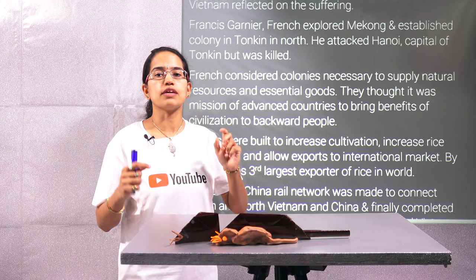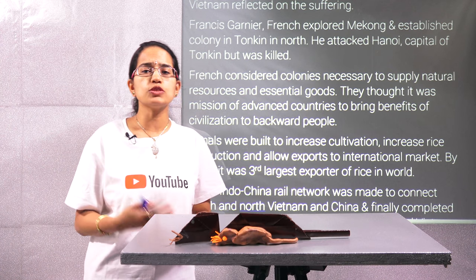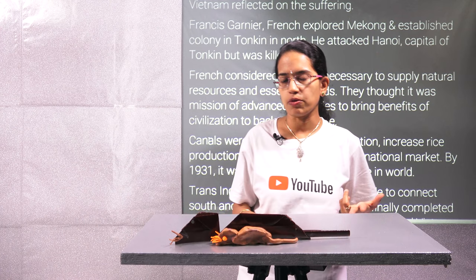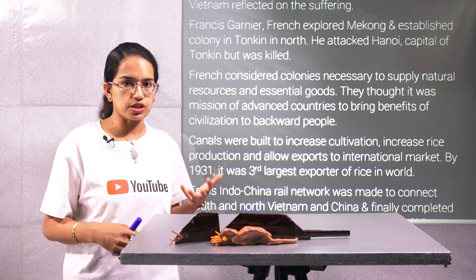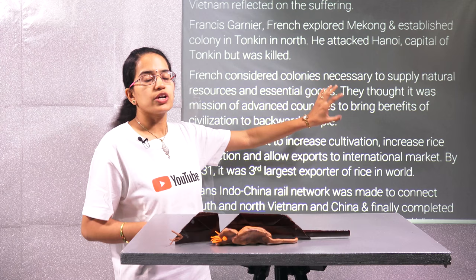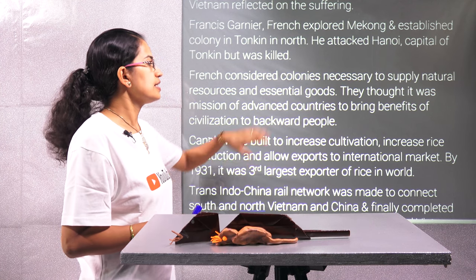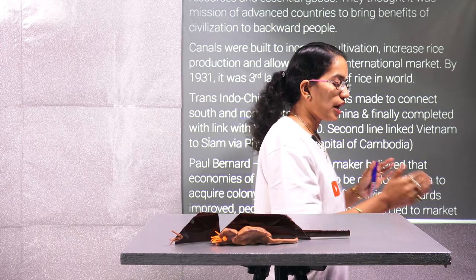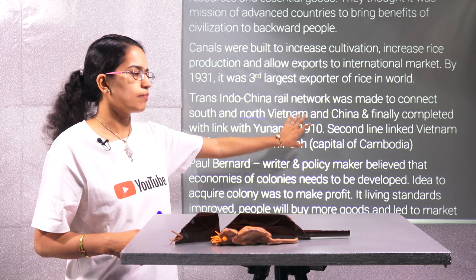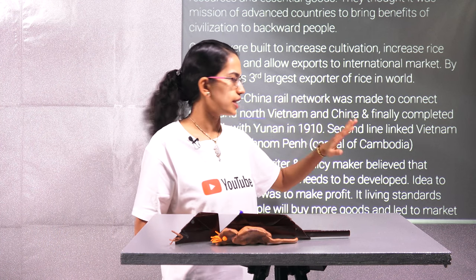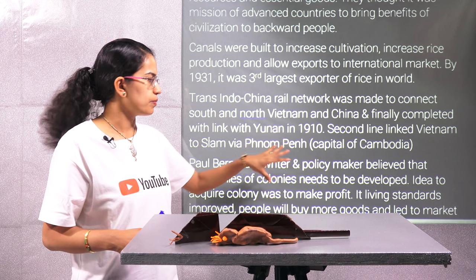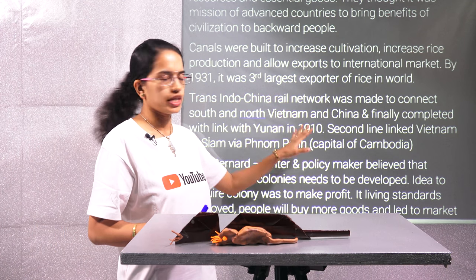To increase all this, France was looking for constant development in the region — in the form of canals for irrigation purposes because this was a very fertile belt with rice as the predominant crop. Vietnam was the third largest exporter of rice during that time. France was also looking to increase agricultural production for export to international markets, which could bring in revenue. France built a railway network within Indochina connecting South and North Vietnam, completed with a link to Yunnan province of China in 1910, and a second link with Siam via Phnom Penh, the capital of Cambodia — those two links were the extensions of the Trans-Indochina rail network.